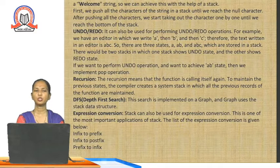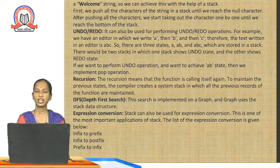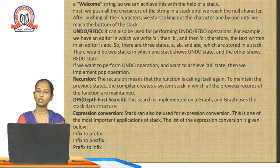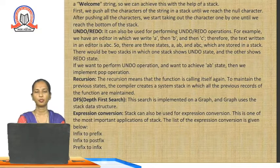The next application is undo and redo operations. For example, in an editor we write A, then B, then C, so the text becomes ABC. There are three states — A, AB, and ABC — stored in the stack. There would be two stacks: one showing the undo state and the other showing the redo state. If we want to perform the undo operation and achieve the AB state, we implement the pop operation.